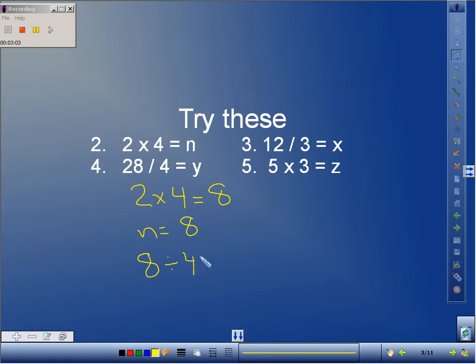We want to try another one, let's try number 3. Let's go 12 divided by 3, which is going to equal 4, so our variable of x will equal 4. Now if we do an inverse operation, we're going from division, we need to go to multiplication, so we'll do 4 times 3 equals 12.